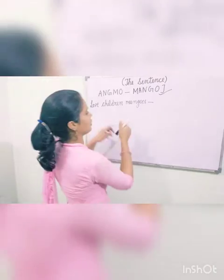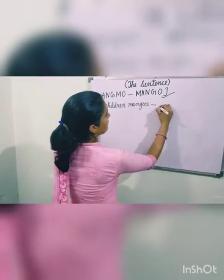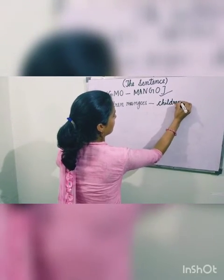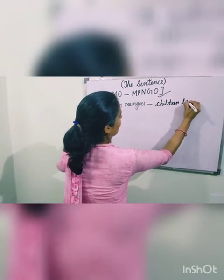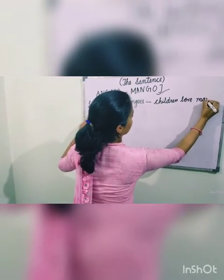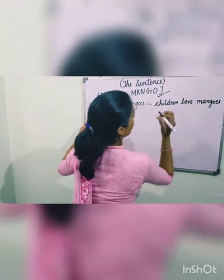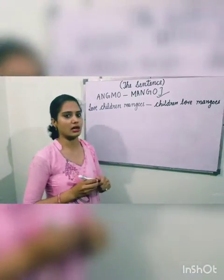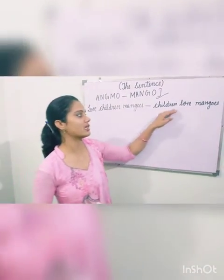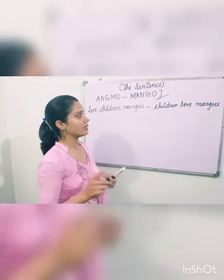Now rearrange it. In words ko rearrange karene ke baad: children love mangoes. Bachhe jo hai, wo aams ko pasand karte hai, aams se pyaar karte hai. Means, after rearranging, we get a correct meaning of this sentence.